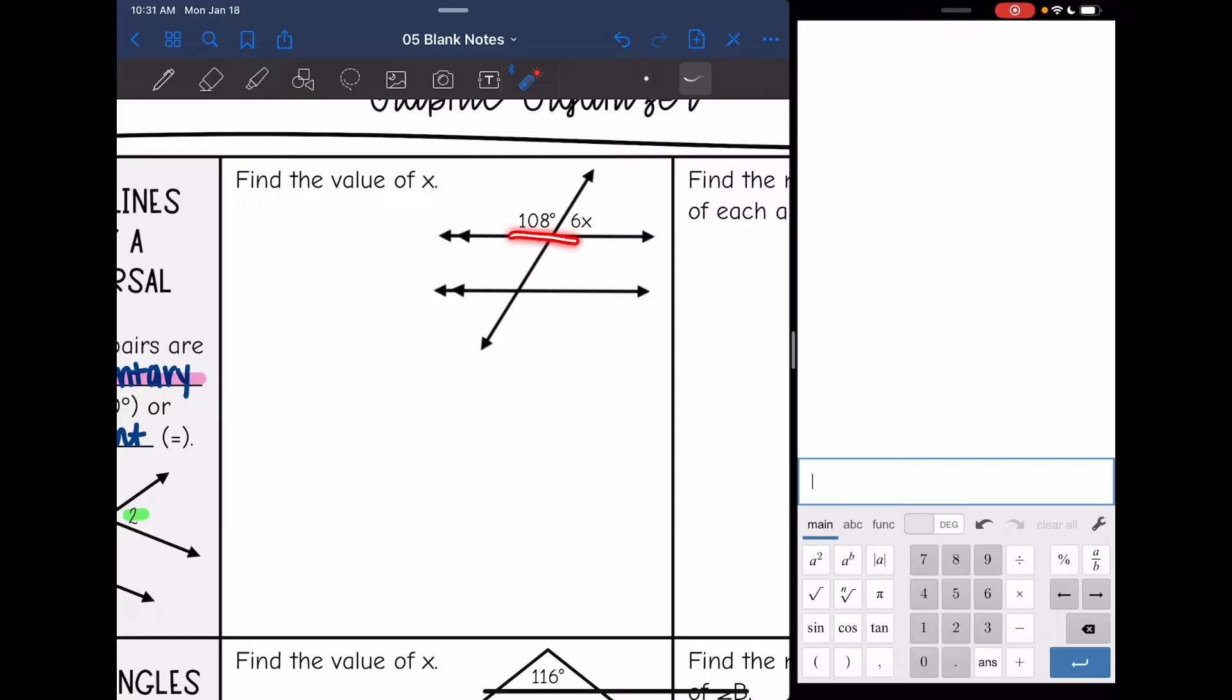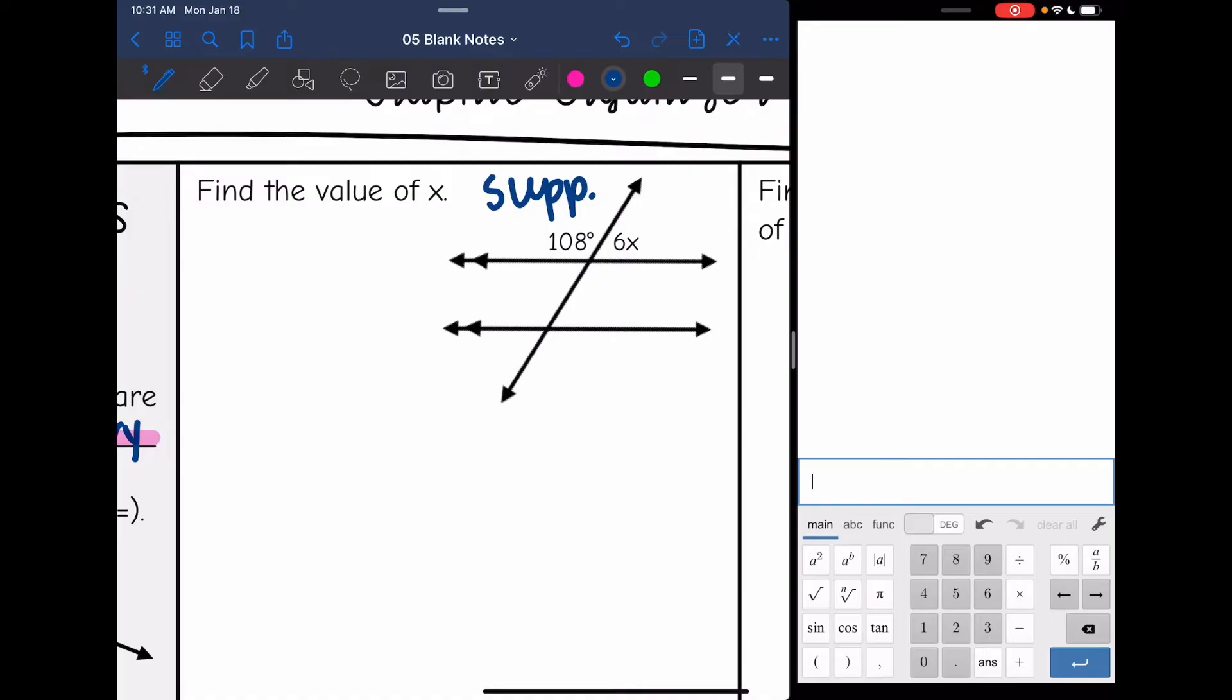These form a line, and we know that lines add to 180 degrees, so these are supplementary. So to find the value of x, I can add them together and set it equal to 180 degrees.